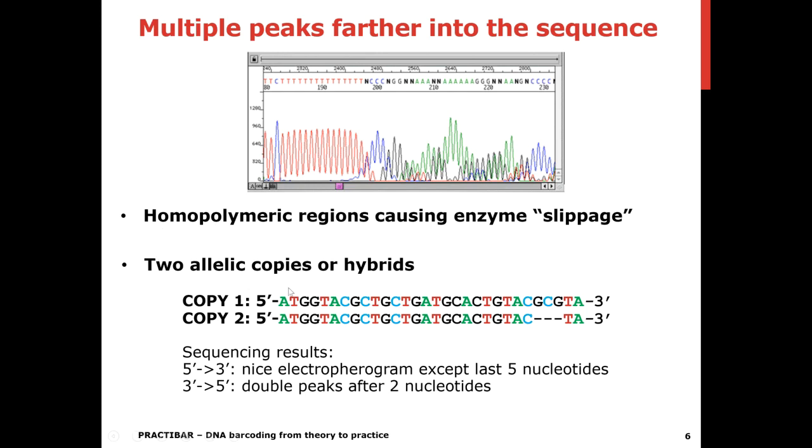So you get for instance here a copy of your sequence, this is larger here, and a copy of another sequence which just has a deletion here of three nucleotides. And basically you get a nice sequence still here, and then you suddenly start to get double peaks because then you get a G peak here but you also get the T peak at the same position.